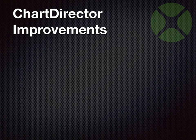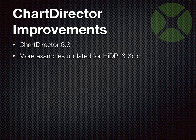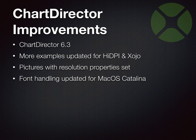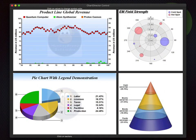ChartDirector is our library for showing charts. We support over 29 types of charts with full Unicode support and 3D charts. We updated to ChartDirector 6.3, updated examples for high resolution and newer Xojo versions, and we now make sure all rendered pictures have the proper DPI value. We updated the font handling recently for macOS Catalina — if you're using ChartDirector and want to use it with Catalina, please update to the latest version. Here are a few example charts.